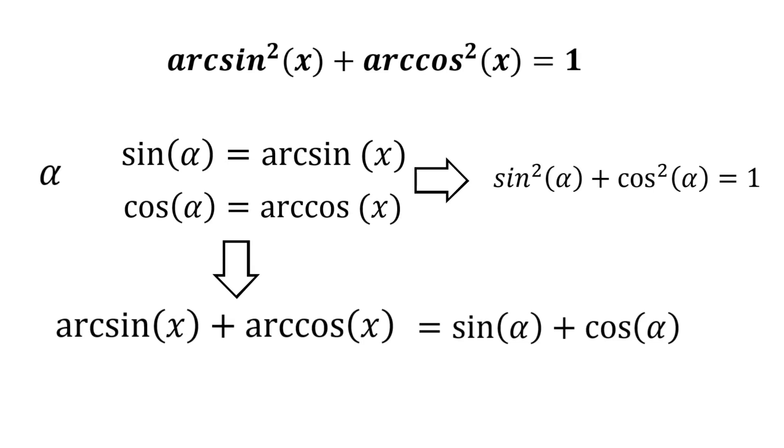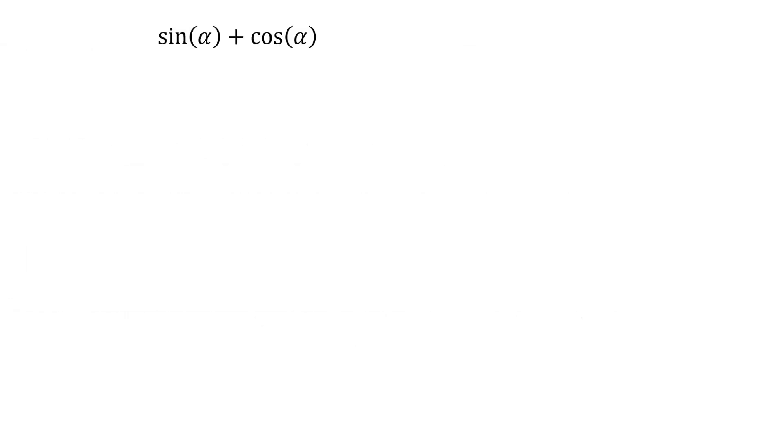There is no direct formula to simplify this sum, but we can use a trick. Basically, we rewrite cosine alpha as sine of pi divided by 2 minus alpha. And now, we can use a basic formula for the sum of two sine functions.